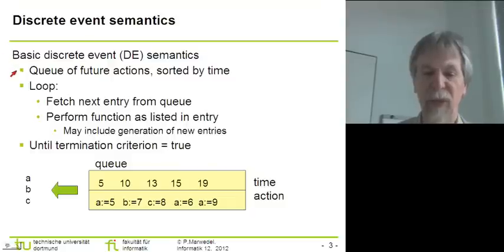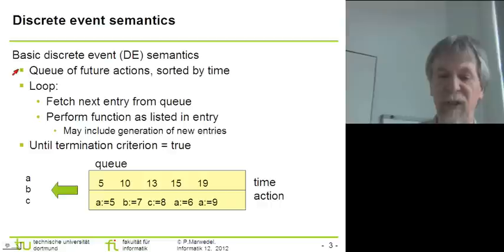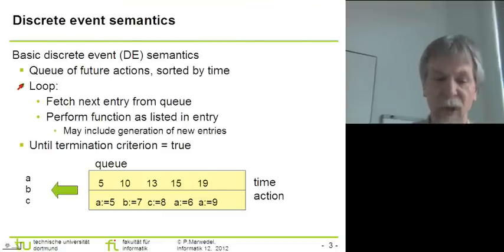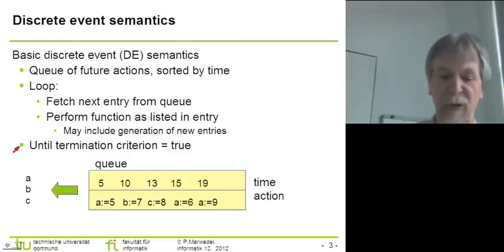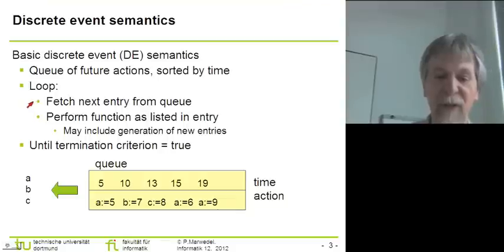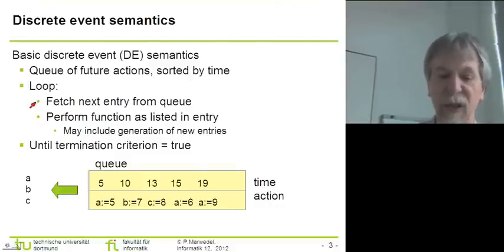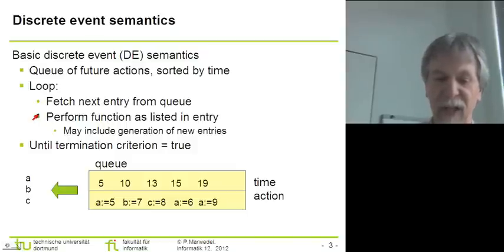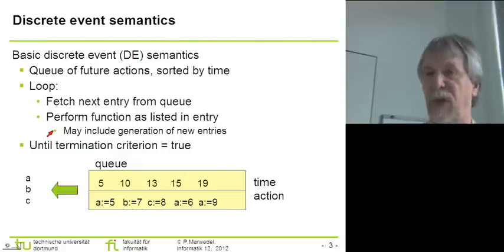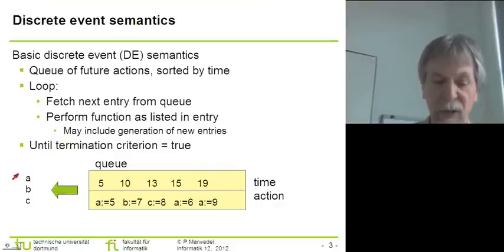Implementations are typically based on a queue of future actions sorted by time, which makes processing more efficient. The execution semantics is based on a loop that executes until we stop — for example, because we have reached the maximum simulation time. For each iteration, we fetch the next entry from the queue linked to the earliest timestamp, perform the corresponding function, which may include generating new entries and assigning new values to variables.